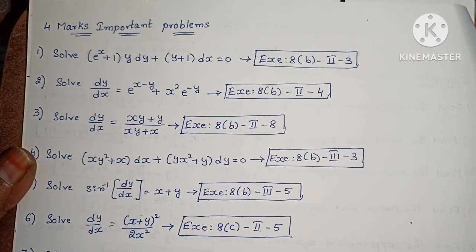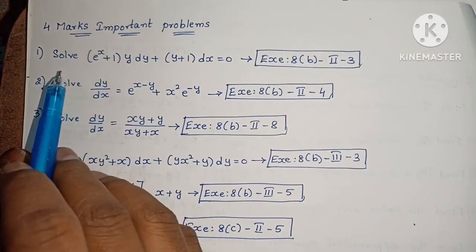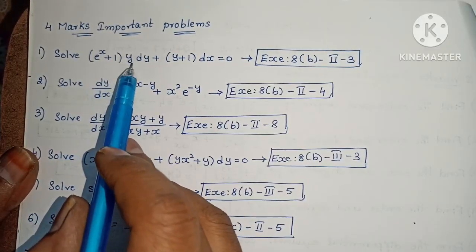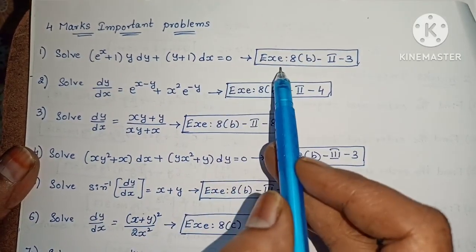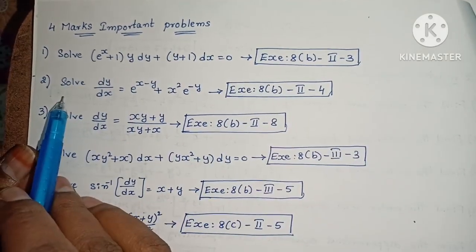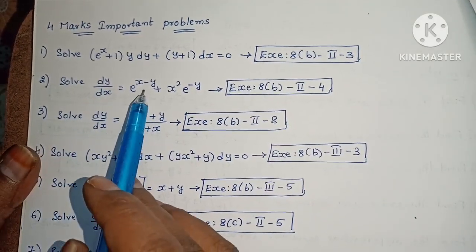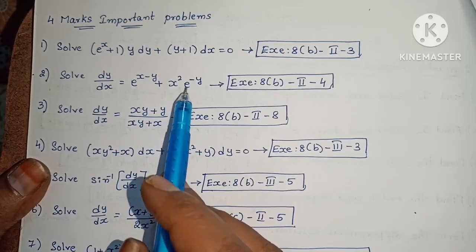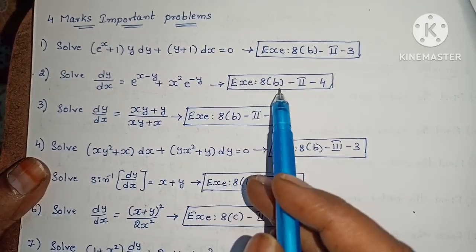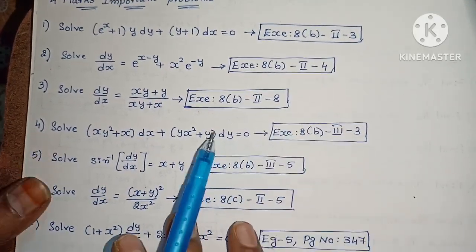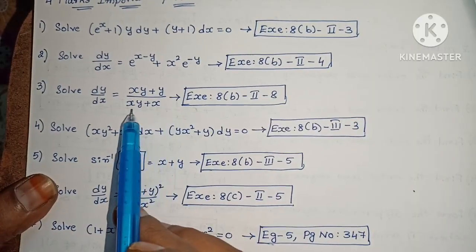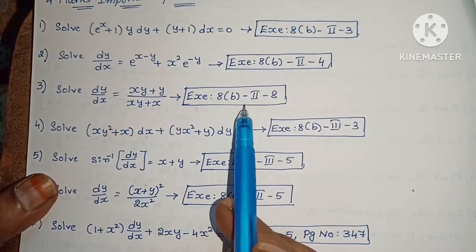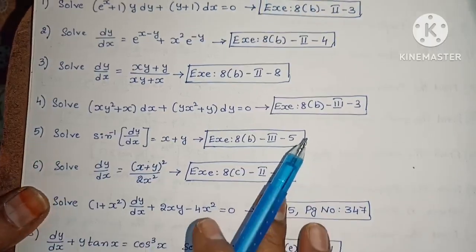The 2 marks problems are complete. Now 4 marks important problems — first one: solve (eˣ + 1)·y·dy plus (y + 1)·dx equals 0. Next, solve dy/dx equals e^(x−y) plus x²·e^(−y). Next, solve dy/dx equals (xy + y)/(xy + x).